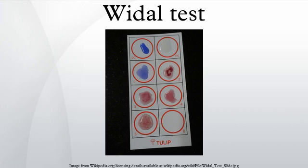Often, 2-mercaptoethanol is added to the Widal test. This agent more easily denatures the IgM class of antibodies, so if a decrease in the titer is seen after using this agent, it means that the contribution of IgM has been removed, leaving the IgG component. This differentiation of antibody classes is important, as it allows for the distinction of a recent from an old infection.